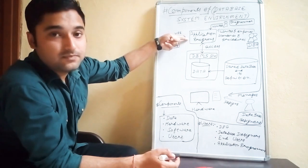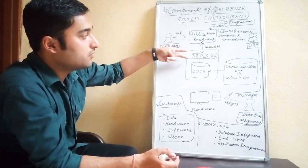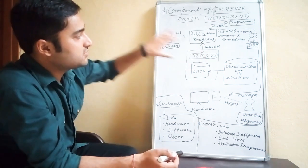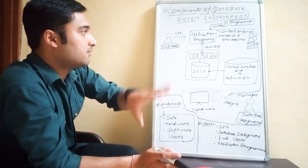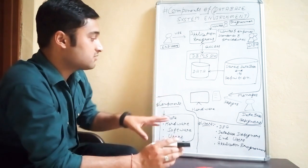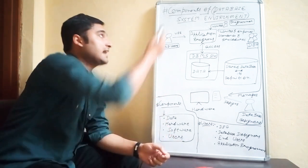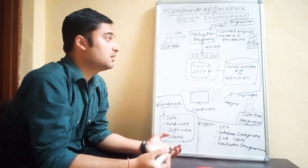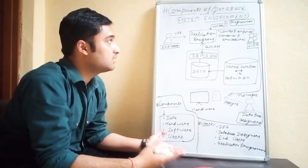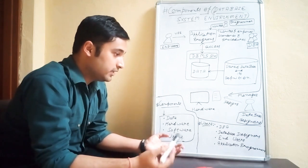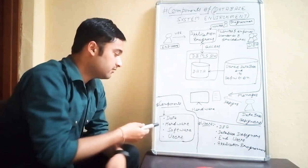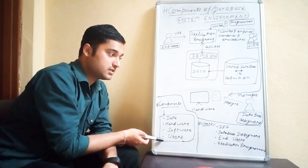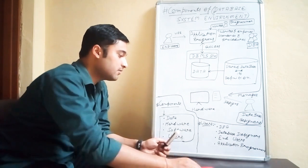So only three things to remember: application program, DBMS software, and the data. Now we have to understand the actual components of the database system environment. It is categorized into four: the first one is data, the second one is hardware, then software, then users.